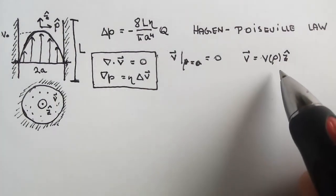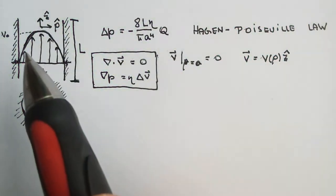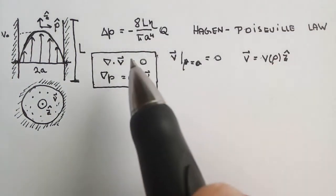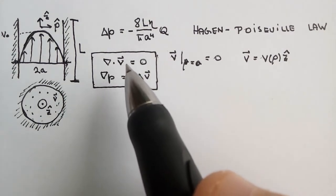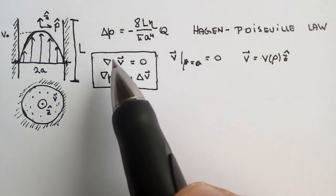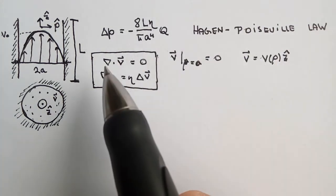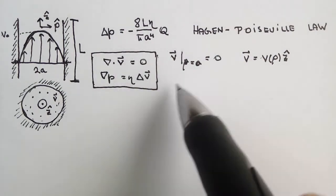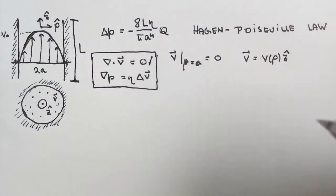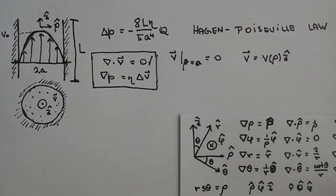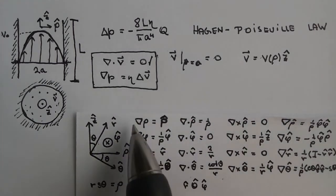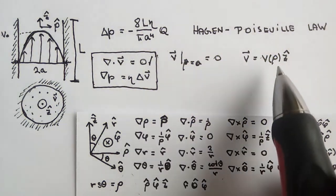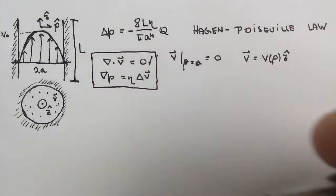This assumption corresponds to a parabolic velocity profile, which is easy to work with. When we substitute this form into the continuity equation, divergence of V equals zero, we get the divergence of a z-hat field. Using the vector calculus identities from the reference chart, nabla dot this expression gives V/rho times rho-hat dot z-hat, which is zero. So the first equation is satisfied automatically.